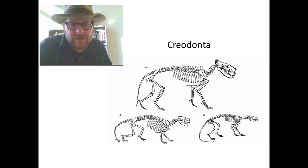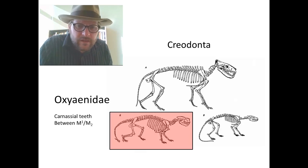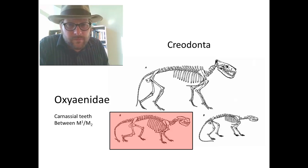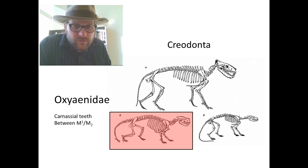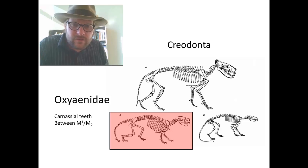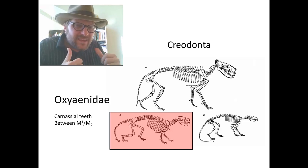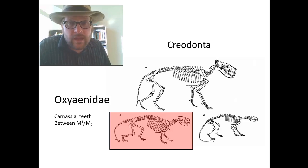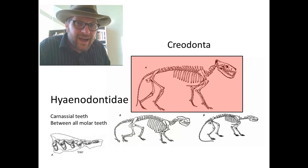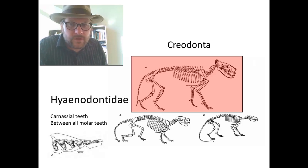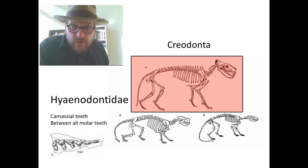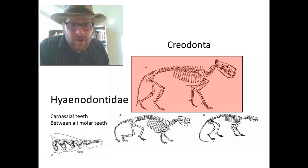The other group of carnivoran mammals that do not belong within the Carnivora are the Creodonts. There are two real groups of Creodonts. The Oxyaenids are a group that were basically lion-like, and they were very large during the first part of the Cenozoic, about 40 million years ago. This is the skeleton of Patriofelis. The Oxyaenids had carnassial teeth between the upper first molar and the second lower molar — further back than what we see in today's Carnivora. The other group of Creodonts are the Hyaenodontidae, which include Hyaenodon, one of the larger members. Most of these had small brains, and eventually the Creodonts went extinct about 34 million years ago.